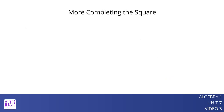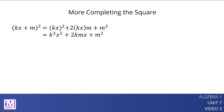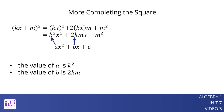In general, the quantity kx plus m squared can be written as k squared x squared plus 2kmx plus m squared. If a quadratic expression is of the form ax squared plus bx plus c, then the value of a is k squared, the value of b is 2km, and the value of c is m squared.